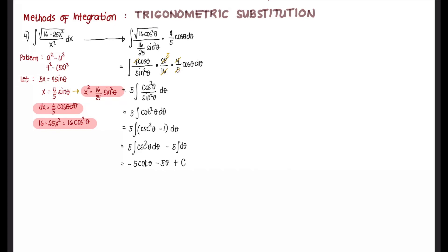Now we have to bring back theta to the original variable using the substitution equation. We draw our right triangle to show the ratio of the sides. If 5x equals 4 sine of theta, then sine of theta is equal to 5x over 4. Recall that sine theta is opposite over hypotenuse. So we label our triangle, this is 5x, and the hypotenuse is 4. Therefore, the adjacent side is the square root of 16 minus 25x squared.